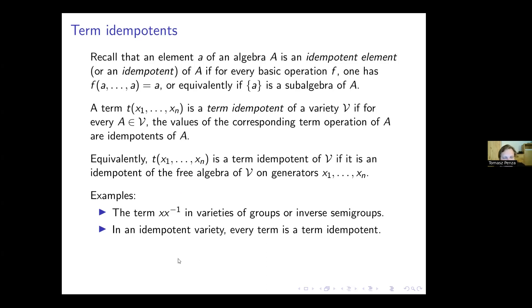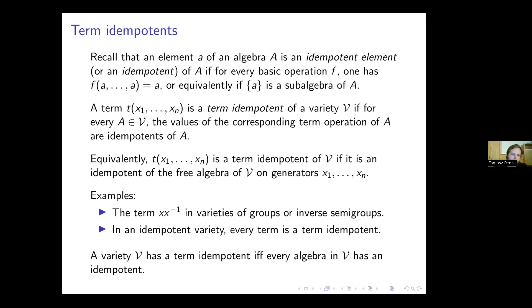Another quite obvious example: in an idempotent variety — a variety in which every element in every algebra is an idempotent — every term is a term idempotent, because for every term, the corresponding term operation always produces idempotent elements. Also, a variety V has some term idempotent if and only if every algebra in V has some idempotent.